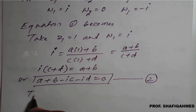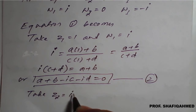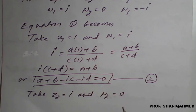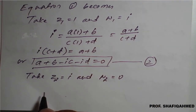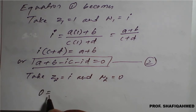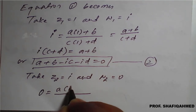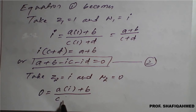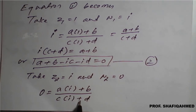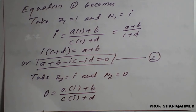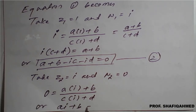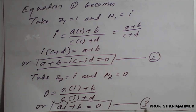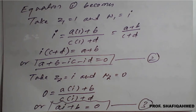Taking z2 = i and w2 = 0, equation 1 becomes: 0 = (ai + b) / (ci + d). Cross-multiplying, the denominator vanishes since w = 0, so we get: ai + b = 0. This is equation number 3.